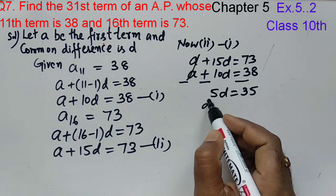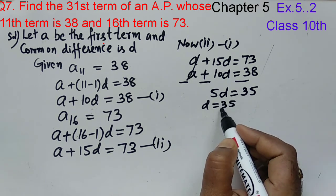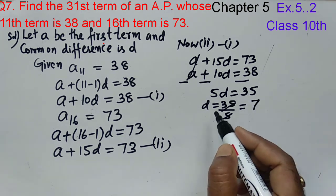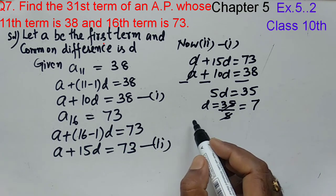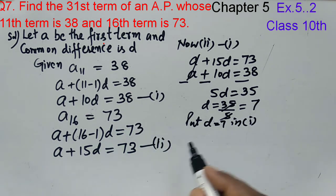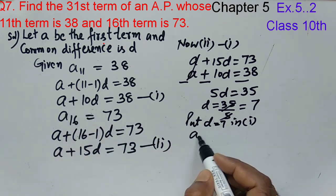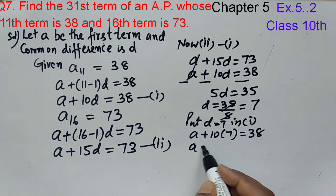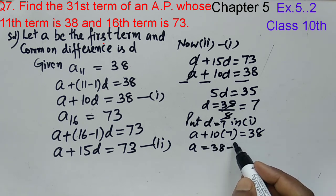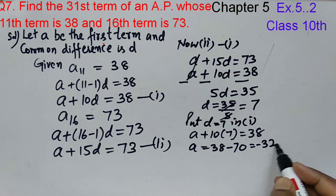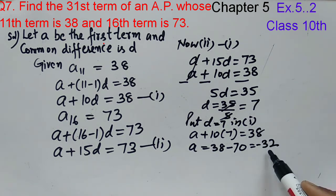After subtracting: 15D minus 10D gives 5D, and 73 minus 38 gives 35. So 5D equals 35, therefore D equals 7. Now we have D. We can substitute D equal to 7 into the first equation. First equation is A plus 10D equals 38, so A plus 10 into 7 equals 38. A equals 38 minus 70, which equals minus 32. So A is minus 32 and D is 7.